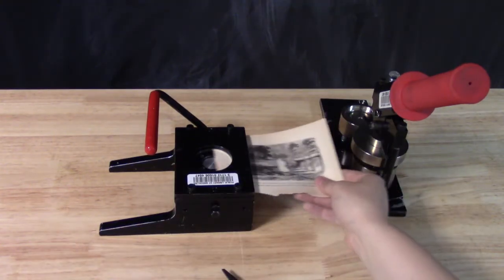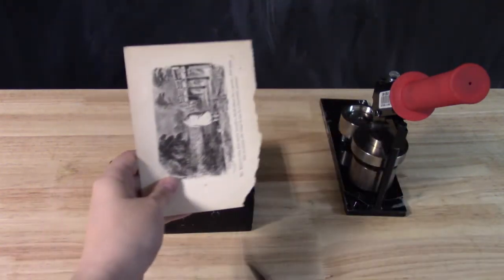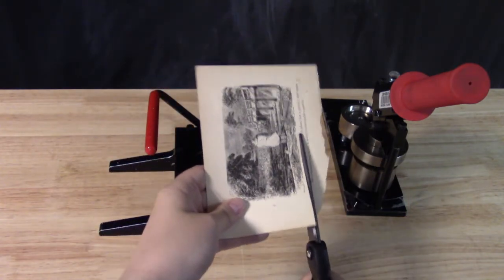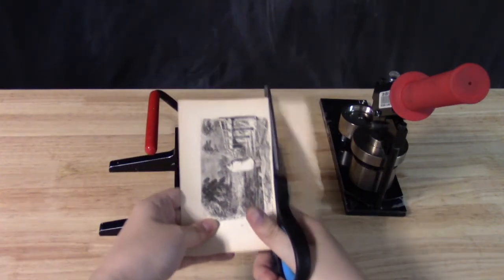Slide the image you'd like to cut into the slot in the side of the circle punch. You might have to cut your piece of paper down a bit for it to fit, like this.